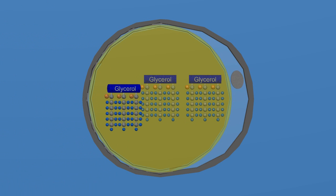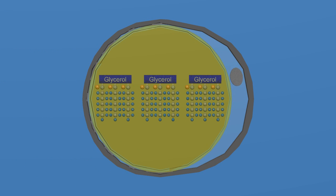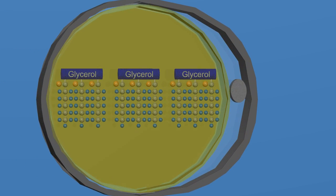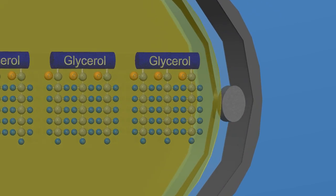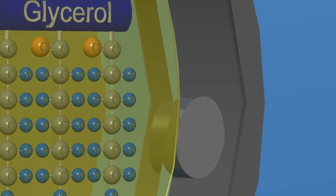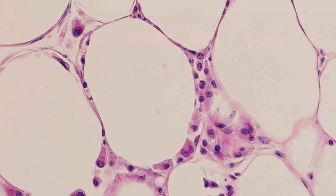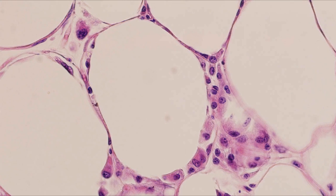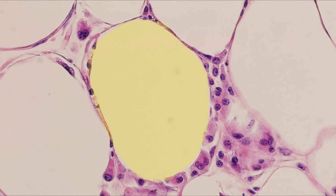It'll expand as we ingest more and more calories, and this is what makes us fat. This is a photomicrograph of an obese individual, and you can see how big the cytoplasm is — it just pushes the nucleus to the side and keeps getting bigger and bigger.